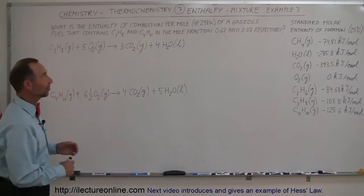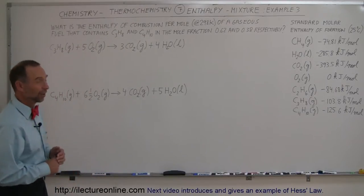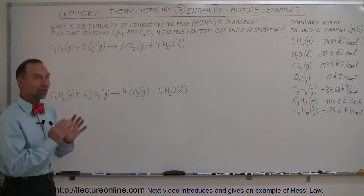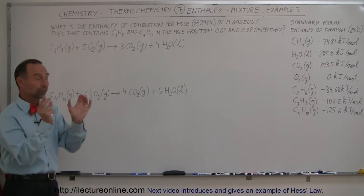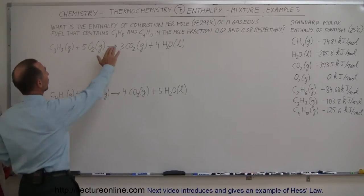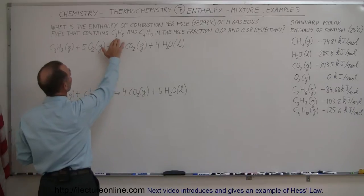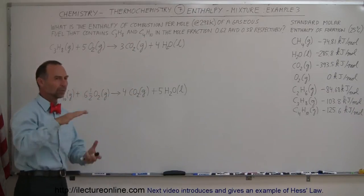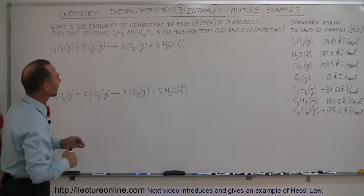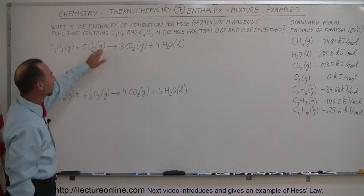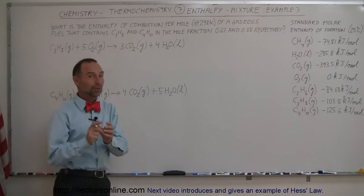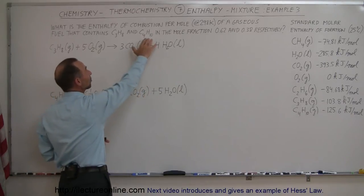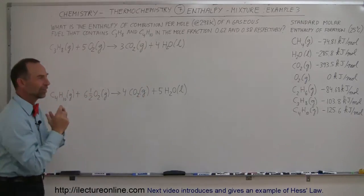Welcome to Electron Line. In this next example on enthalpy, we're going to look at a gaseous fuel that's actually a mixture of two different things — a mixture of propane and butane. Propane is what we tend to cook with; we put it in canisters and barbecue with it. Butane is what we put in our cigarette lighters, and it is a gaseous material if it's not under pressure.